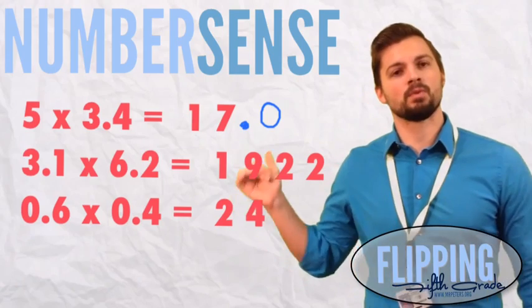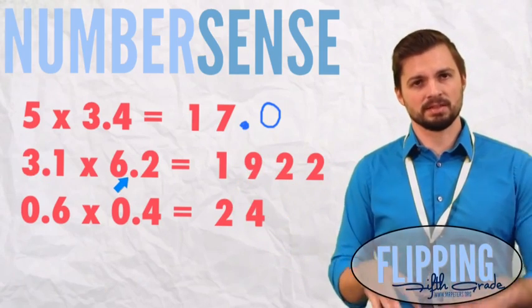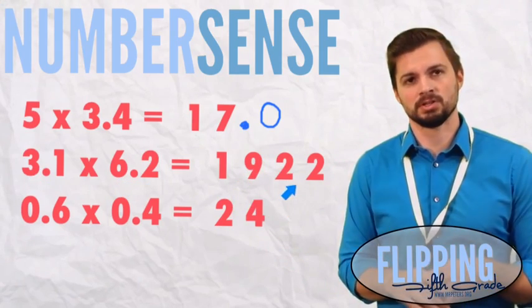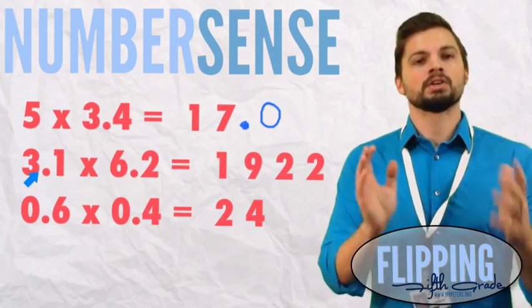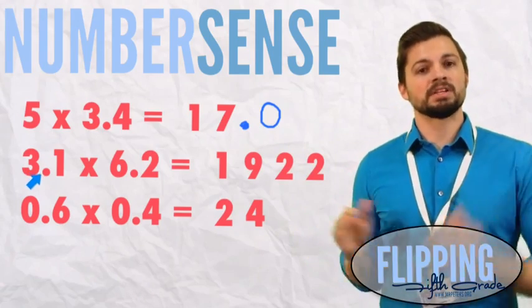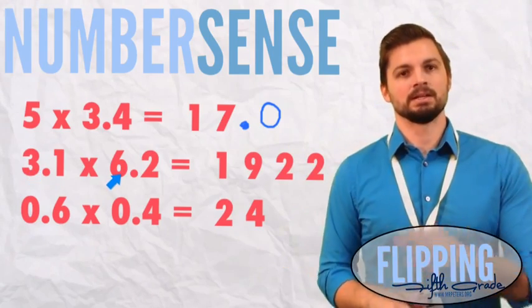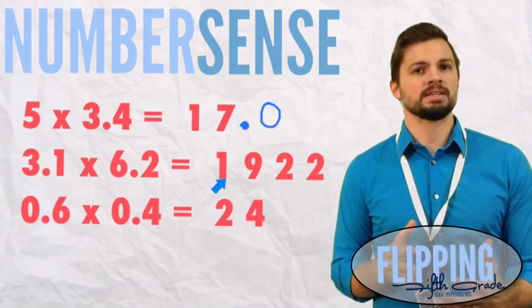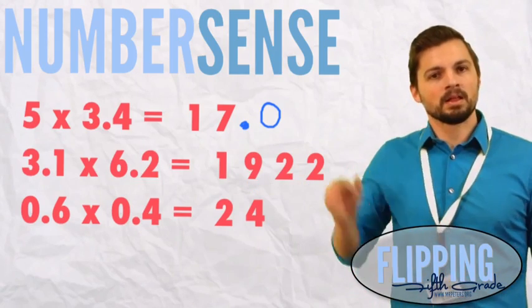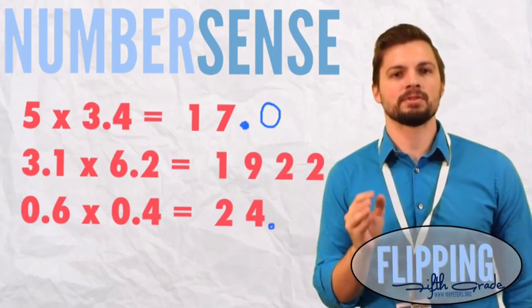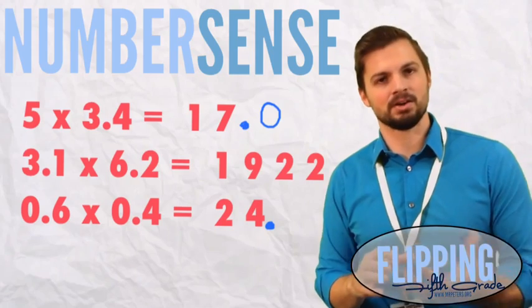In the second example, we have 3 and 1 tenths times 6 and 2 tenths equals 1,922. That's not going to work. So, we look here. 3 times 6 is 18. So, our answer has to be close to 18. Therefore, our decimal should go in after the 9 because 18 and 19 are close.